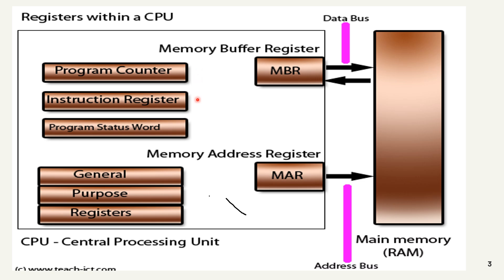The next is the instruction register, which holds the memory address of the current instruction being executed. The next is the program status word register, which contains flags and status information about the current state of the CPU. The next one is the general purpose register, which can be used for any purpose and is typically used to hold operands or temporary data during the execution of instructions.